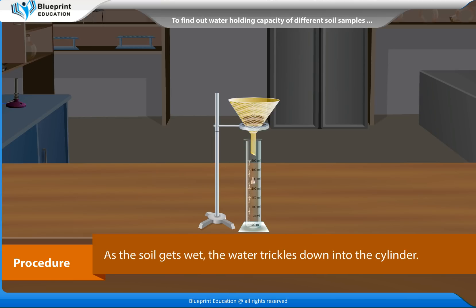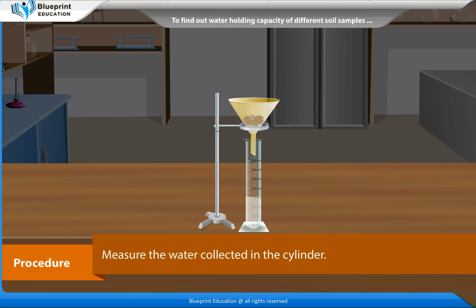As the soil gets wet, the water trickles down into the cylinder. Measure the water collected in the cylinder. Repeat the above process with the other soil samples.